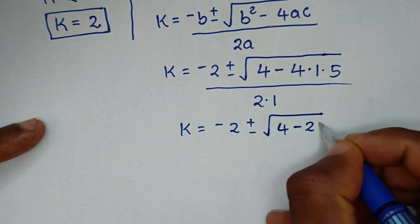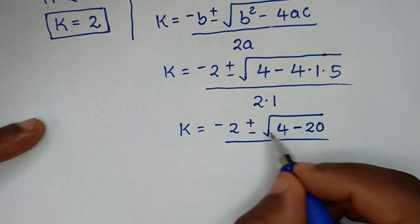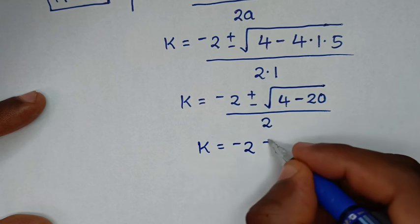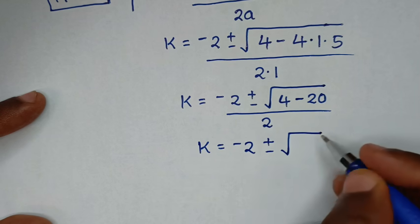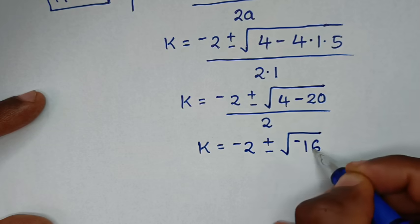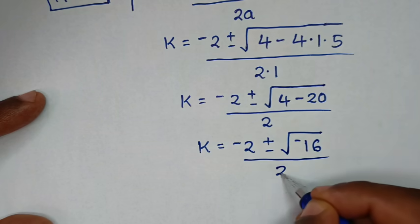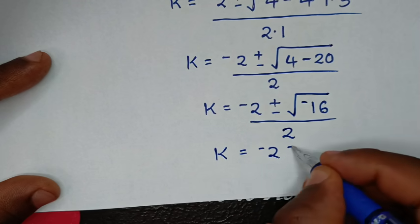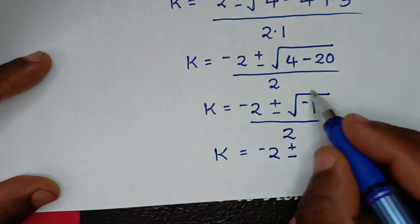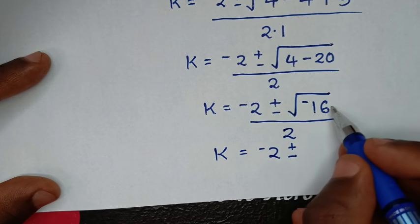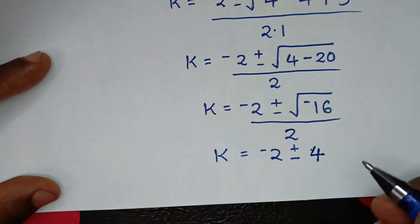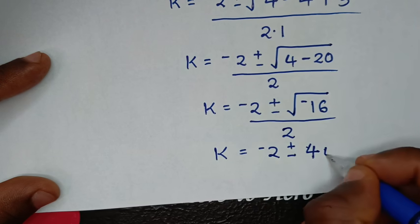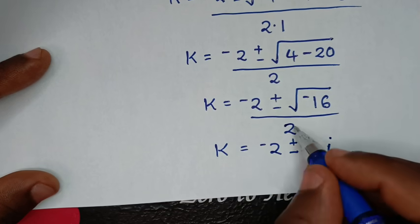So k equals negative 2 plus or minus square root of 4 minus 4 times 1 times 5, which is minus 20, over 2. That gives k equals negative 2 plus or minus square root of 4 minus 20, which is negative 16. The square root of negative 16 is 4 times the square root of negative 1, which is 4i.